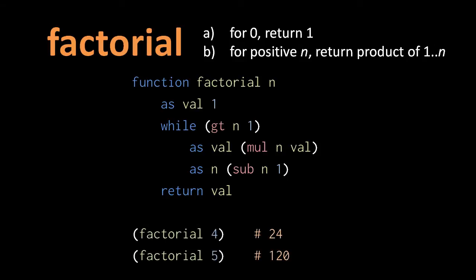So if we call the factorial function with the argument 4, it'll return 24 because 4 times 3 times 2 times 1 is 24. And then if we call the function with the argument 5, it'll return 120 because 5 times 4 times 3 times 2 times 1 is 120.